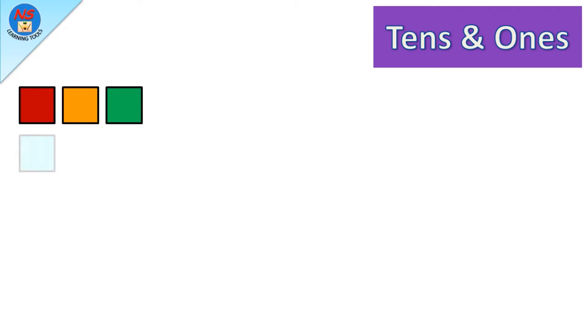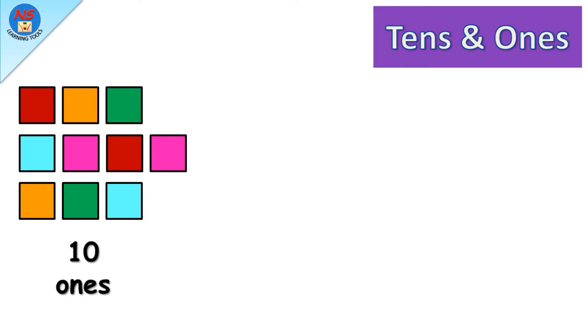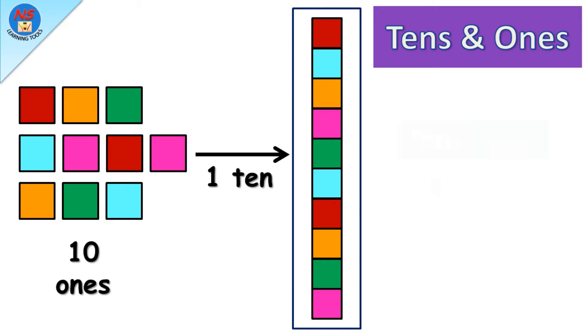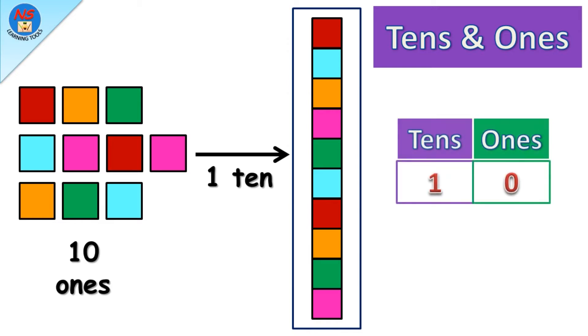Here we have one, two, three, four, five, six, seven, eight, nine, ten. Ten blocks means ten ones. Ten ones make one ten. We stack ten ones to make counting of larger numbers easy. It is represented as one tens and zero ones.